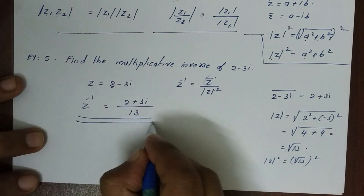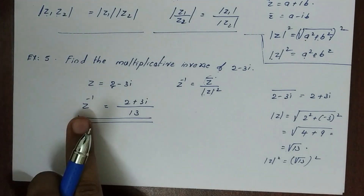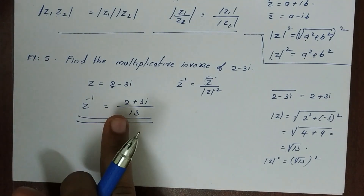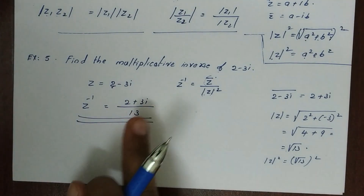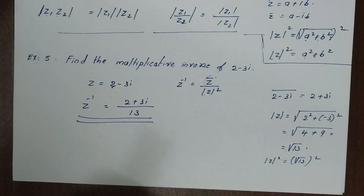So we get the multiplicative inverse: z inverse is equal to 2+3i divided by 13.